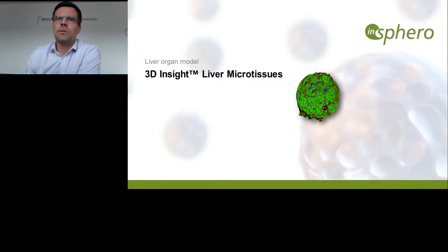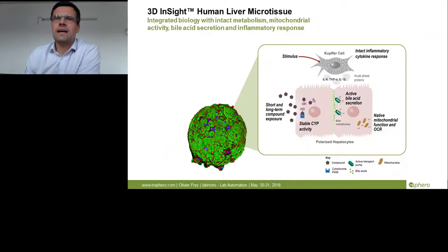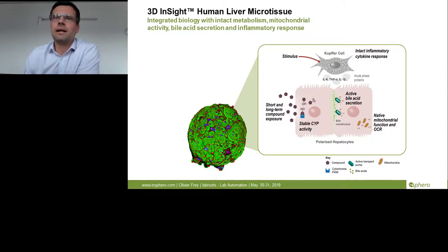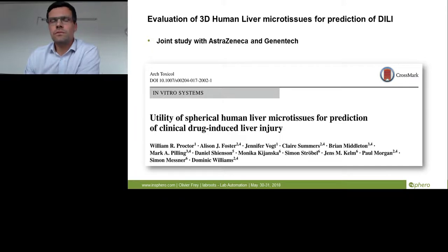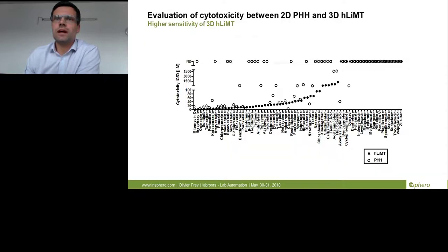I would like to first start with our liver microtissues. These liver microtissues have a complex structure which allows integrated biology and intact metabolism — they have mitochondrial activity, bile acid secretion, and are responsive to inflammatory stimuli. We assessed this 3D tissue model together with AstraZeneca and Genentech to test its utility for clinical drug-induced liver injury, so-called DILI.